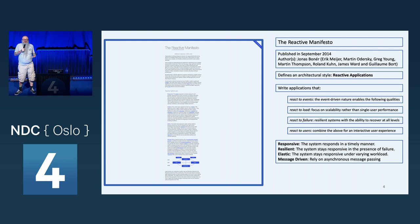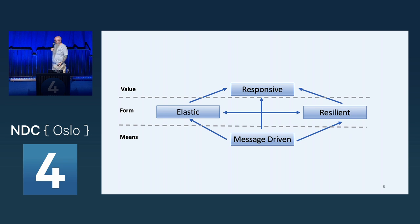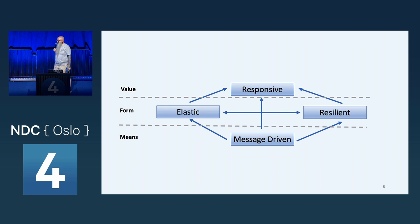They said these properties are valuable: responsive — the system responds in a timely manner; resilient — the system stays responsive in the presence of failure; elastic — the system stays responsive under varying workloads; and message-driven — we rely on asynchronous message passing. By being message-driven, we are able to achieve elasticity and resilience, which together make us responsive to users.